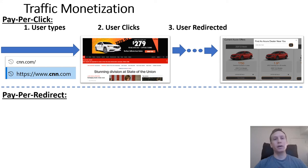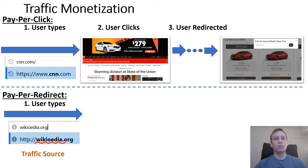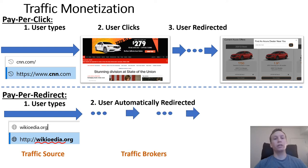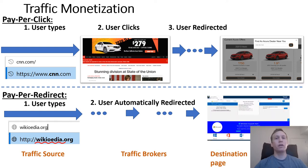Differently, in the case of pay-per-redirect, which is more common in traffic distribution systems, if a user visits a site — in this example mistypes wikipedia.org, which we call a traffic source — the user will be automatically redirected through multiple entities we call traffic brokers, to finally arrive on the destination page, in this example a technical support scam page.